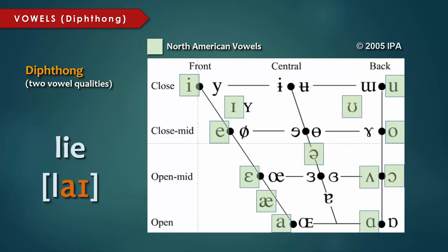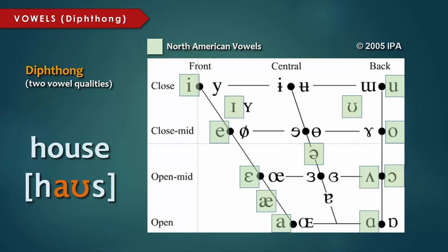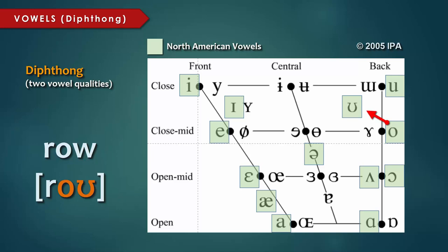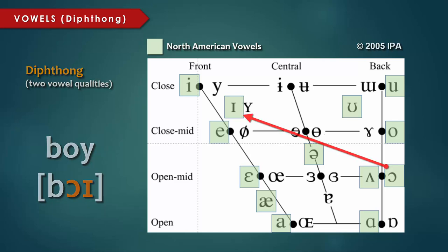I, as in the word lie, starts out at A and ends at I. I, as in the word house, starts at A and ends at U. O, as in the word row, starts out at O and ends at U. And finally, OI, as in the word boy, starts out at AW and ends at I.